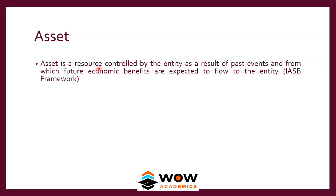For something to be an asset, three conditions must be met. First, the resource must be controlled by the entity. Second, it must have arisen as a result of past events — you cannot show a building you plan to construct in the future as an asset. Third, some future economic benefit must be expected. An old building with zero land and building value that cannot be used or rented cannot be shown as an asset, even if the company legally owns it.